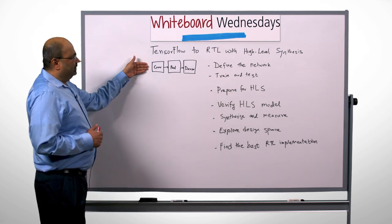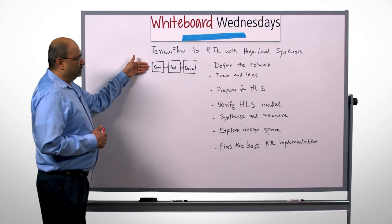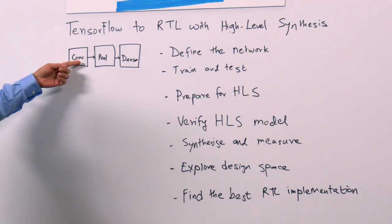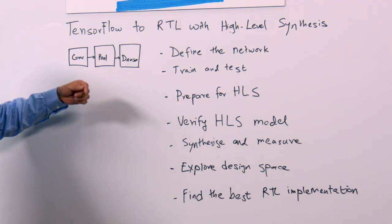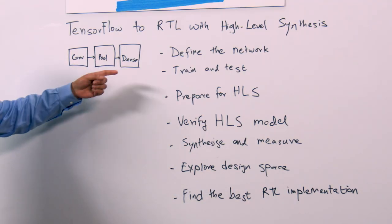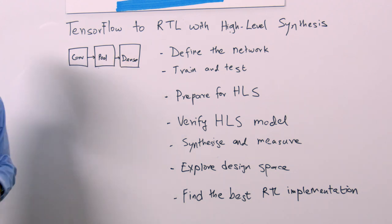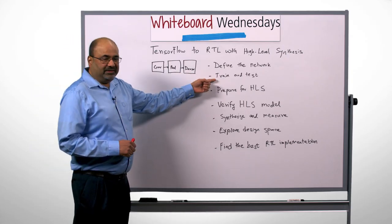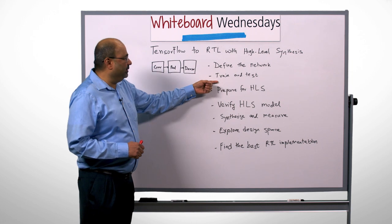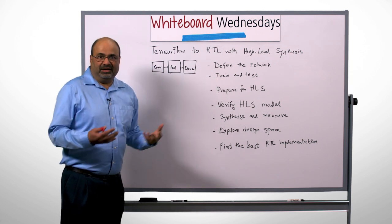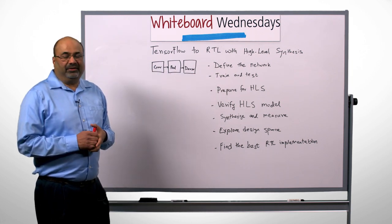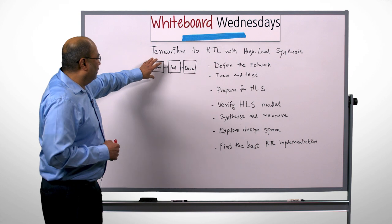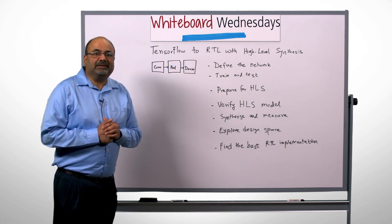You start with the network defined in TensorFlow. For example, you might have a convolution layer, a max pooling layer, and a dense layer in your network. You train and test the network in the TensorFlow environment, and the result of that is all the different weights and bias values for all the parameters of these blocks.